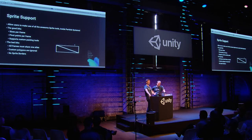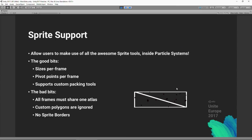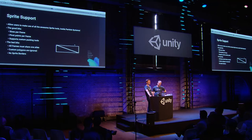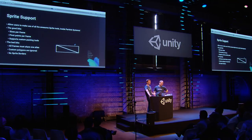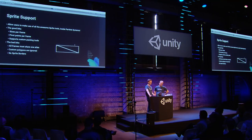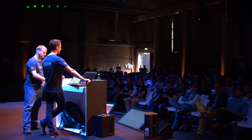There are a few limitations. All frames used in your particle system must share one atlas — you have to pack all textures into one atlas, since the particle system must stay in one draw call. Custom polygons are ignored — all particle billboards are currently quads. We also don't support sprite borders (nine-slice sprites) yet in particles.